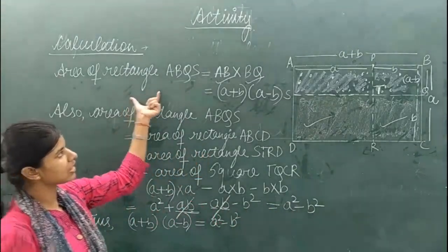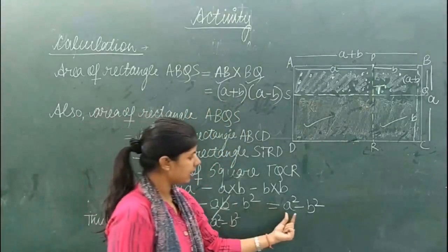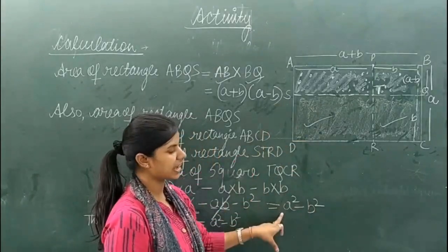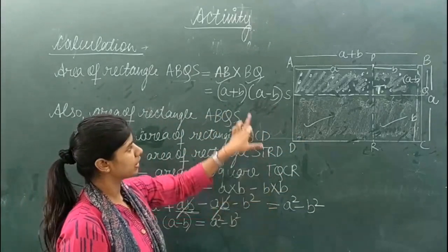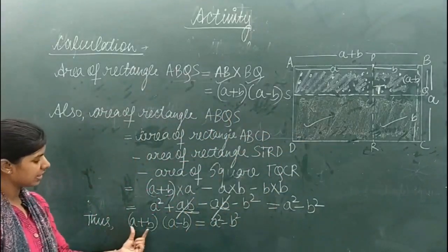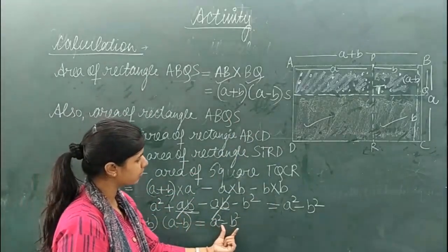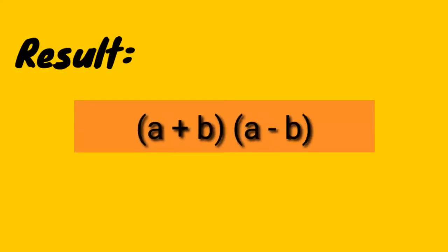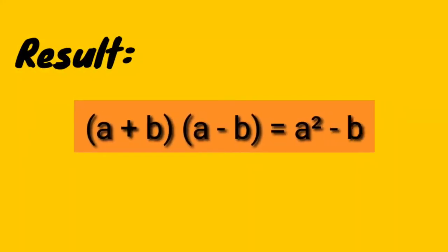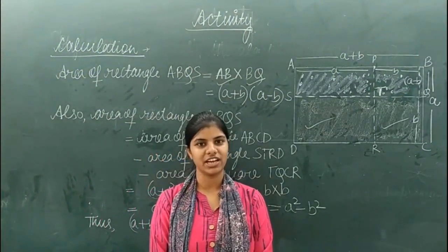From the first method we got (A+B)(A-B), and from the second method we got A²-B². Both represent the area of the same rectangle ABQS, so they must be equal. Thus, (A+B)(A-B) = A²-B². The result is verified: A plus B multiplied by A minus B equals A square minus B square. Thank you and have a nice day!